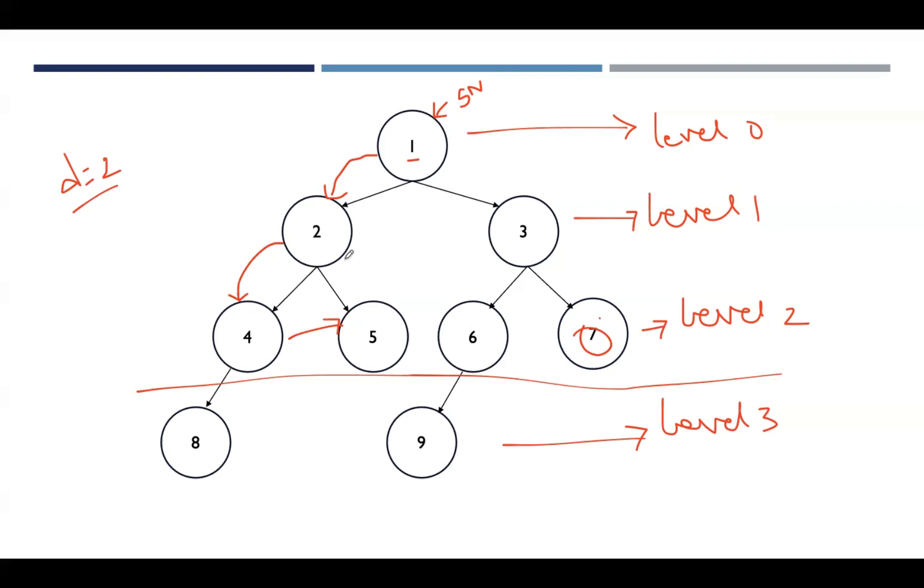So backtrack to 2, then backtrack to 1. Then take the another non-visited adjacent vertex of 1, which is 3. From 1, we'll go to 3. Adjacent vertices of 3 are 6 and 7.